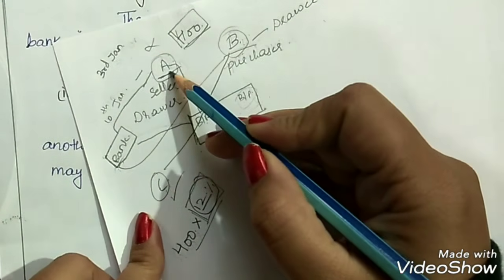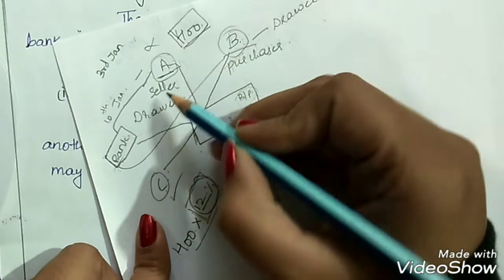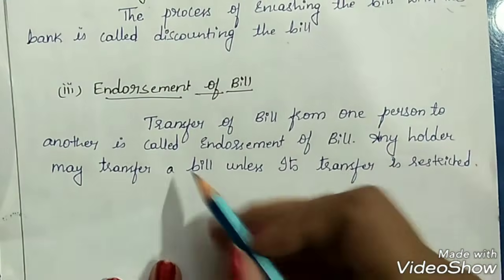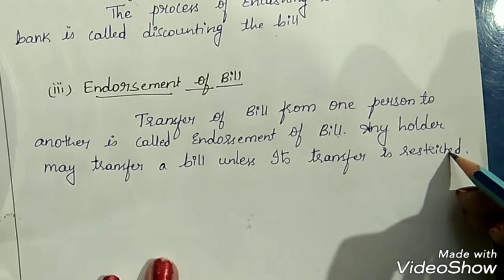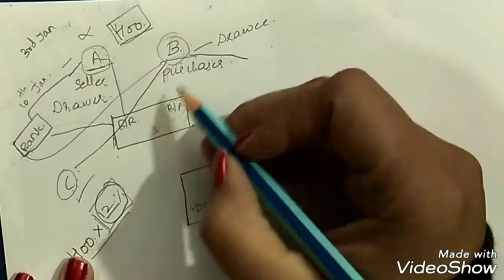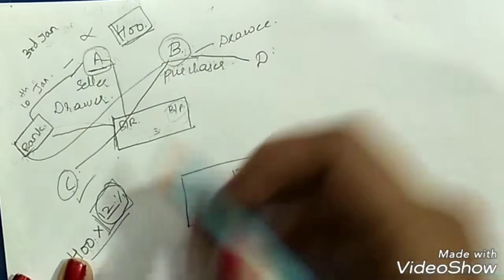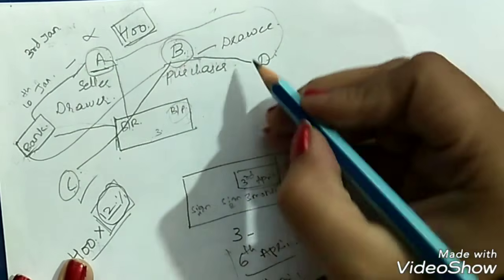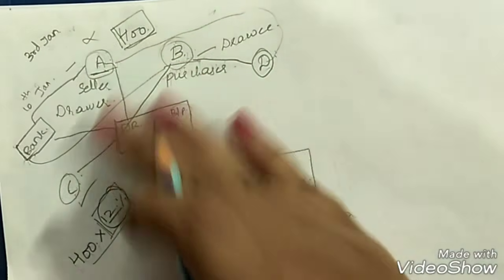The next term is endorsement of bill. If A has to pay a certain amount to C, A can transfer this bill to C, so B directly pays C. This transfer of a bill from one person to another is called endorsement. Any holder may transfer a bill unless its transfer is restricted. Even B can endorse the bill — for example, B could transfer it to his own creditor A. So both A and B can endorse the bill to another person.